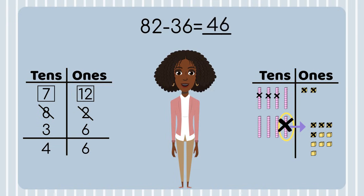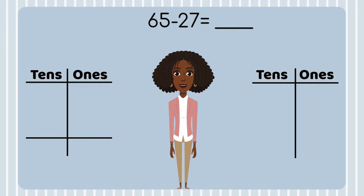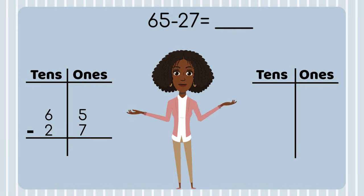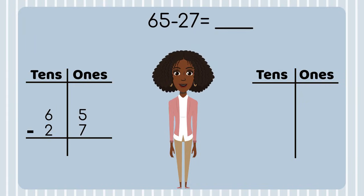Now let's try one together. Our equation is 65 minus 27. I'll create our two place value charts and place our numbers from the equation into one of the charts. Next, we need to model using place value blocks to help us subtract. When you subtract, which number do you model? The total — that's right. What's our total? 65. You got it. Let's model 65 in our other place value chart.